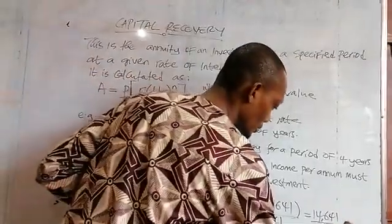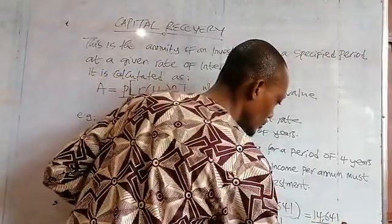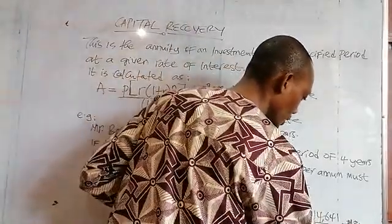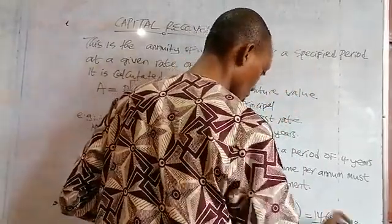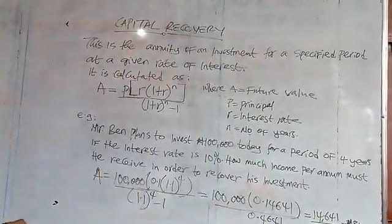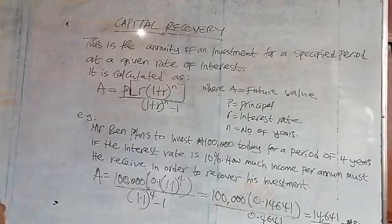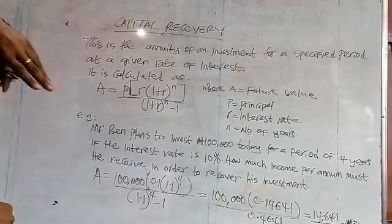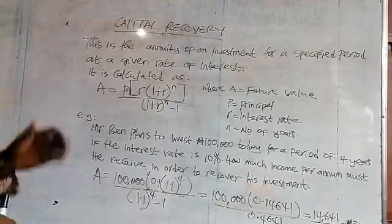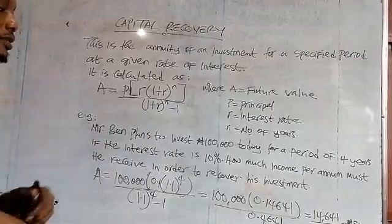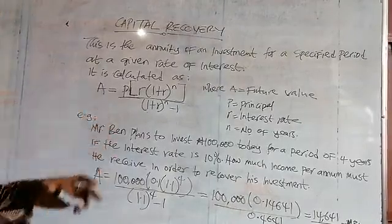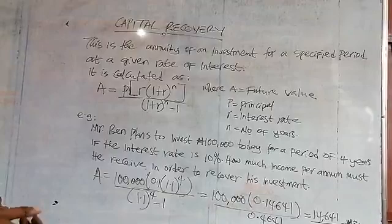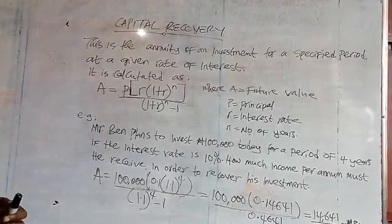Our final answer is $31,000. This is what Mr. Ben will be receiving on an annual basis for 4 years in order to recover his capital — his investment. That is the question on capital recovery. If you have such cases, apply the formula, get the interest rate, and calculate the annual amount to recover your investment.